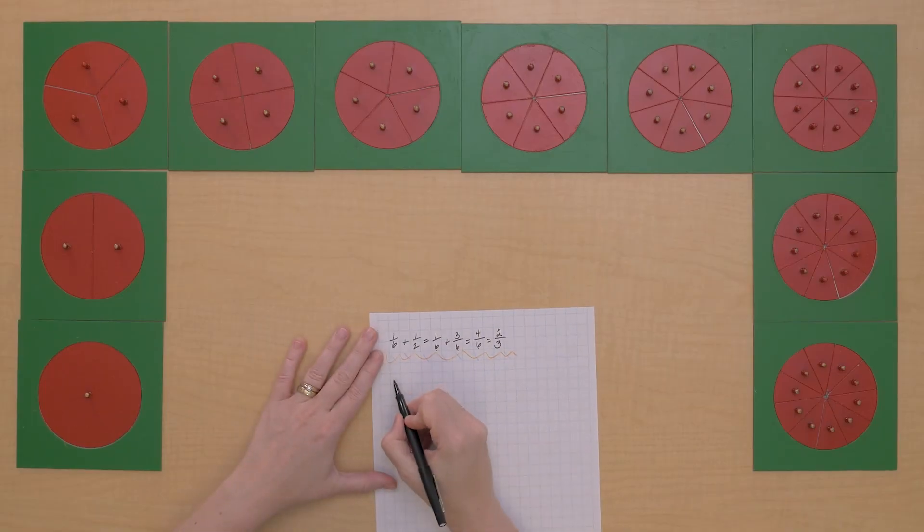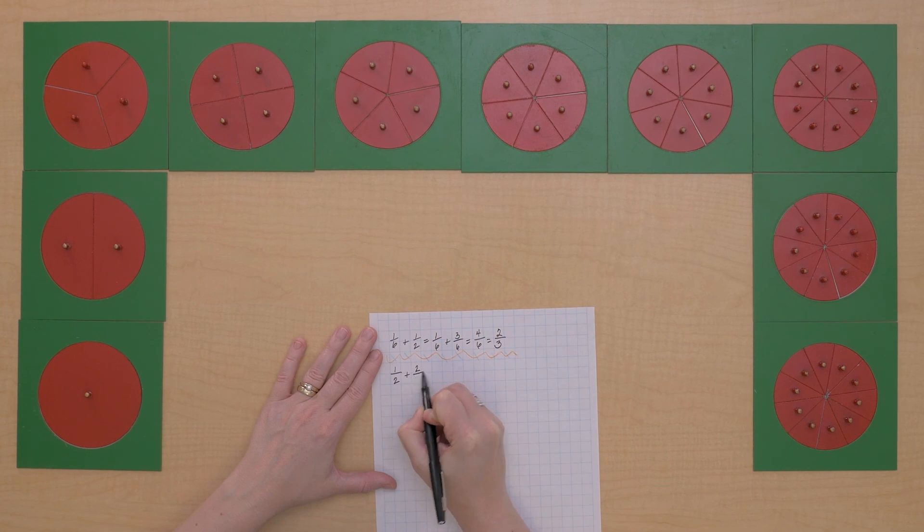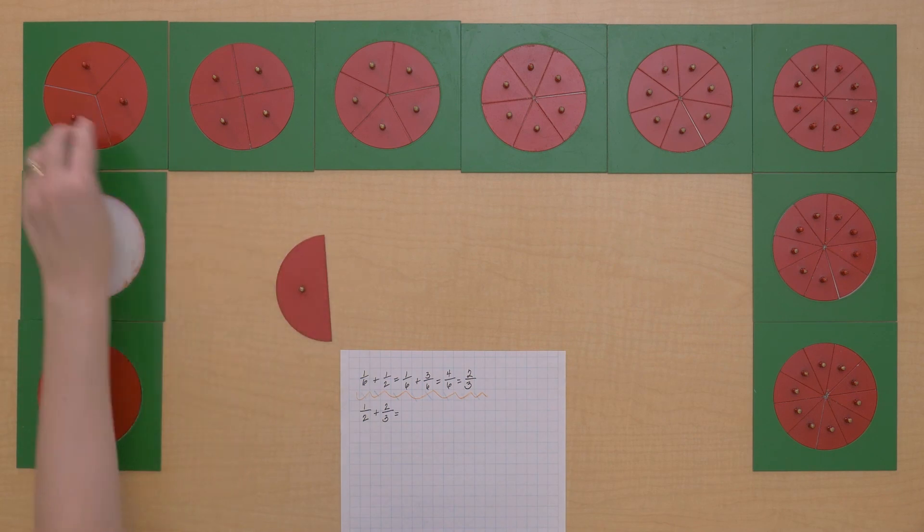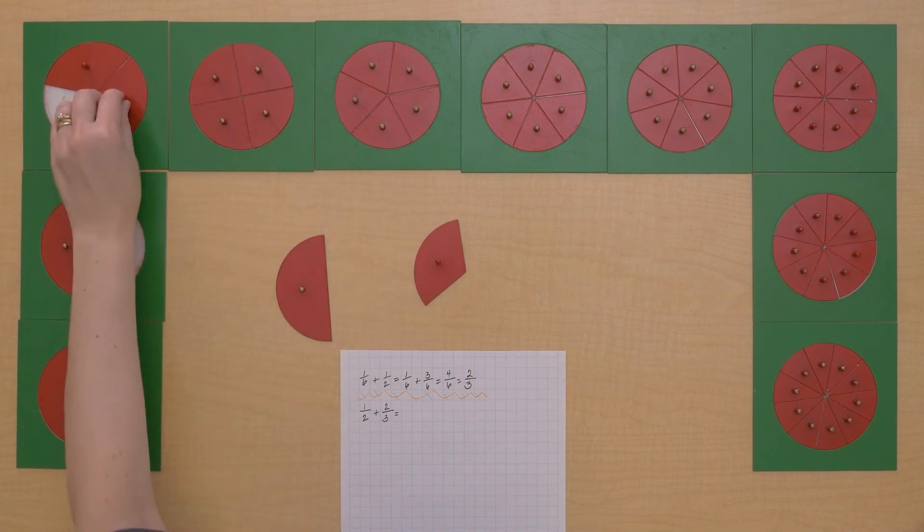All right, let's do another one. Let's do one-half plus two-thirds. One-half plus two-thirds.